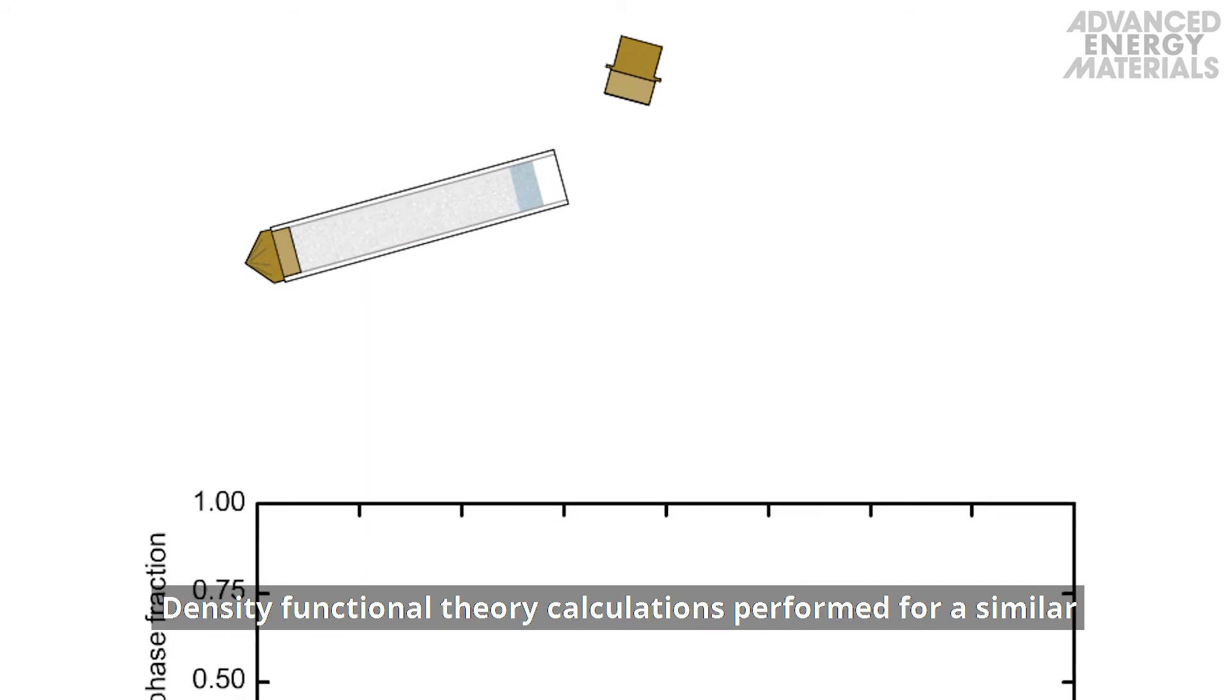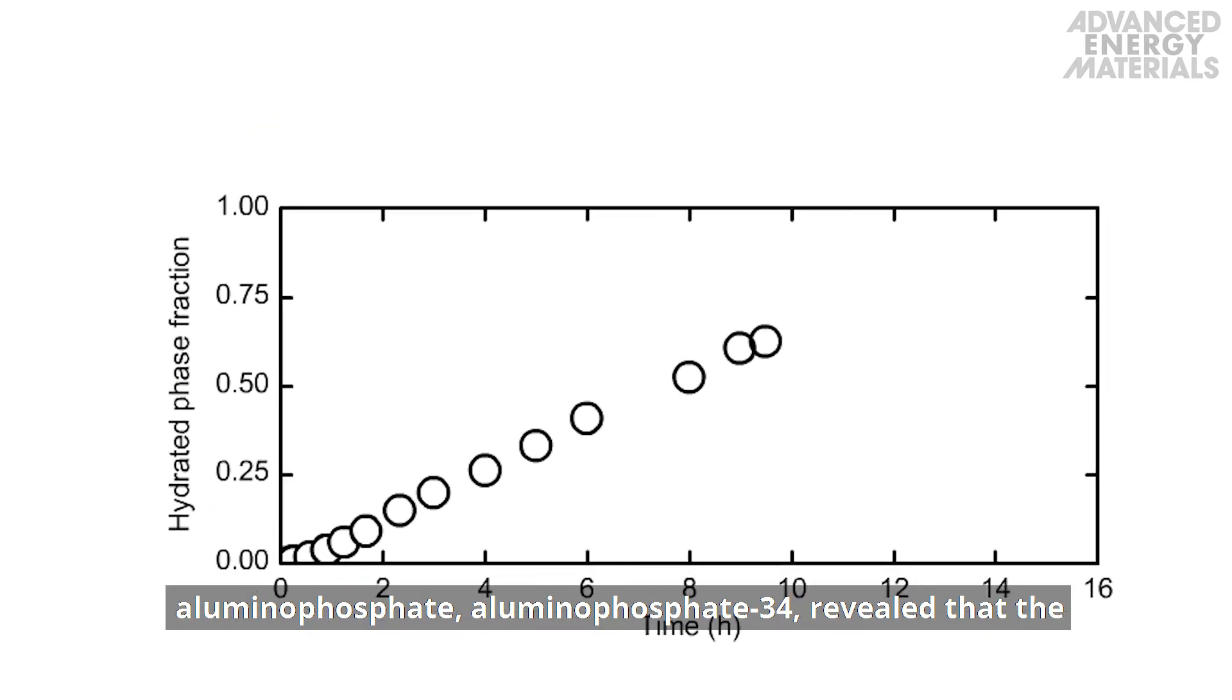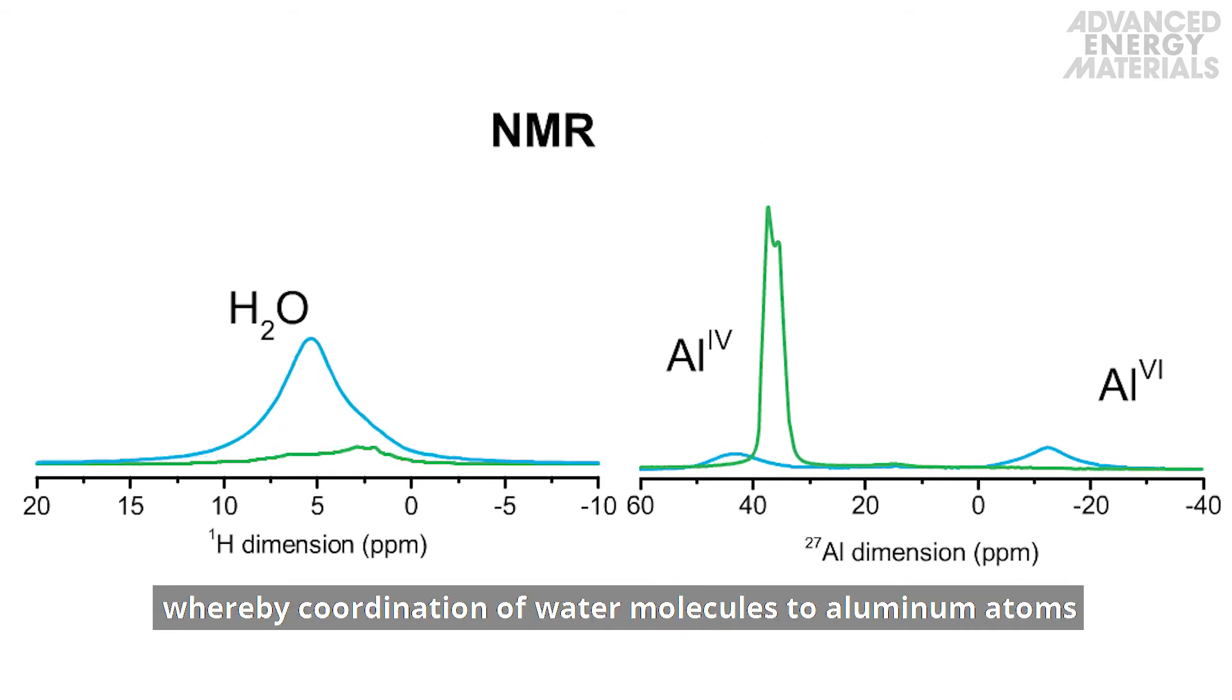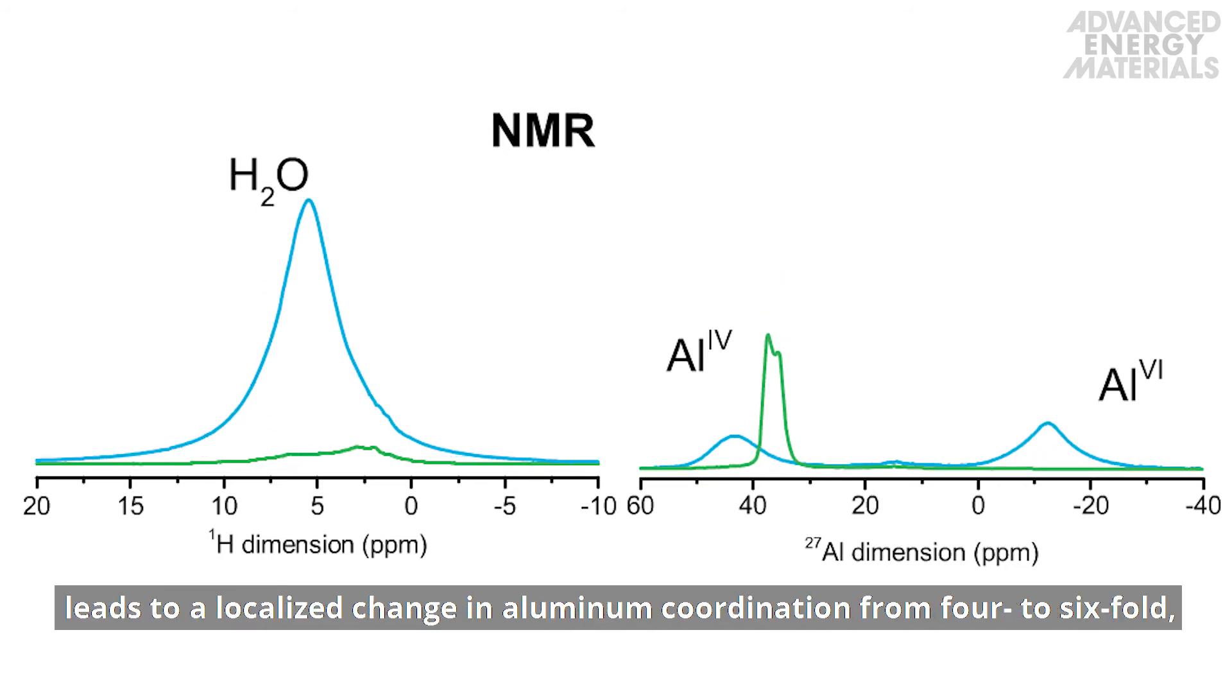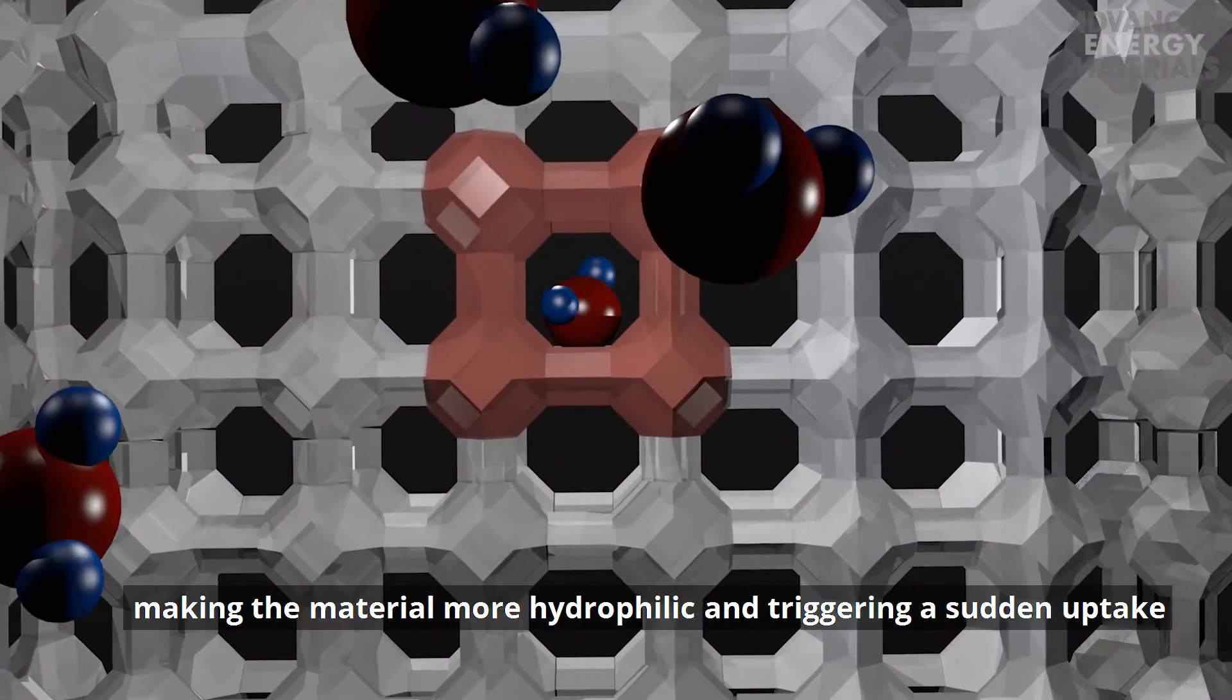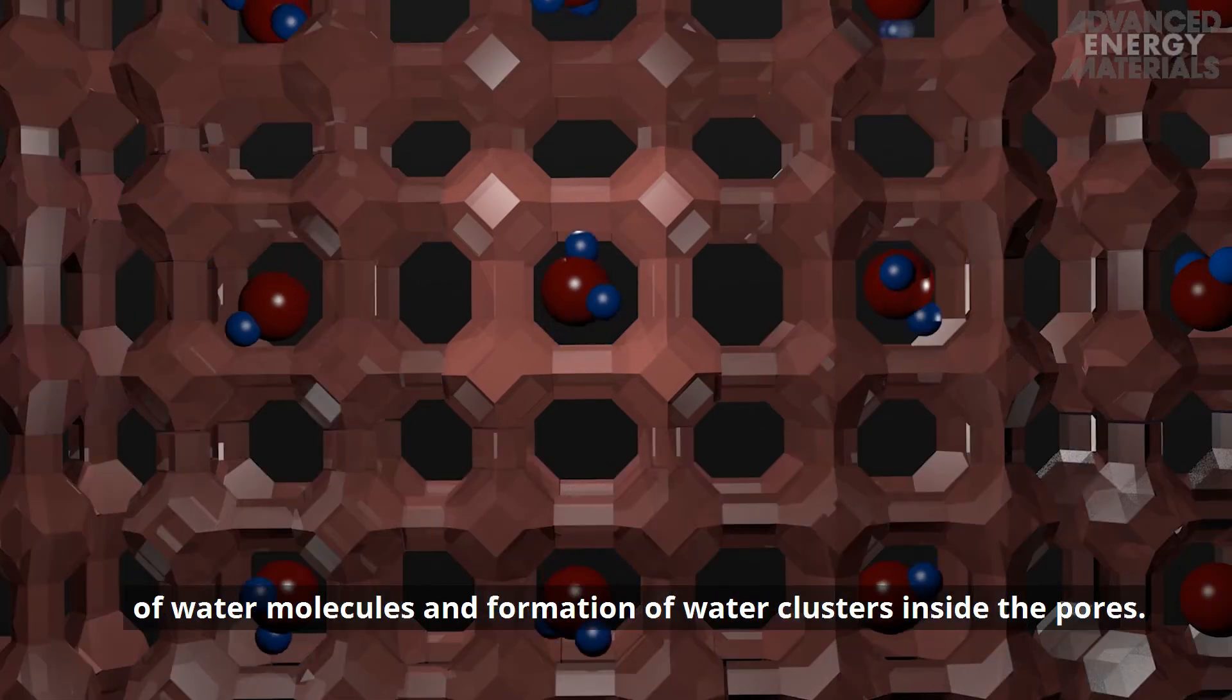Density functional theory calculations performed for a similar aluminophosphate, aluminophosphate-34, revealed that the sudden uptake of water is driven by framework deformation, whereby coordination of water molecules to aluminum atoms leads to a localized change in aluminum coordination from four to six-fold, making the material more hydrophilic and triggering a sudden uptake of water molecules and formation of water clusters inside the pores.